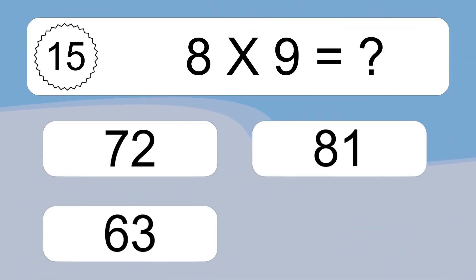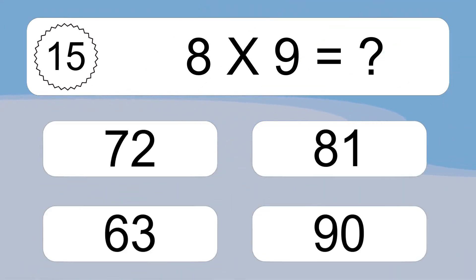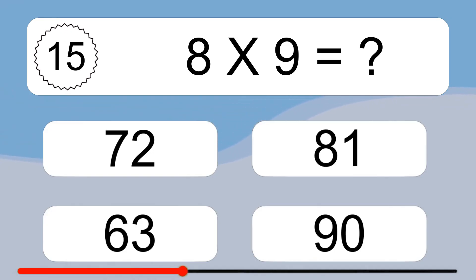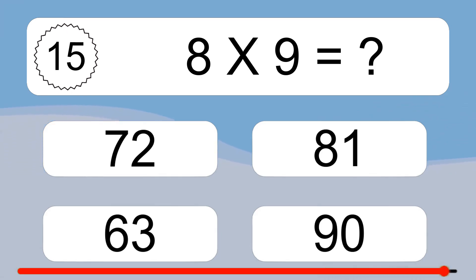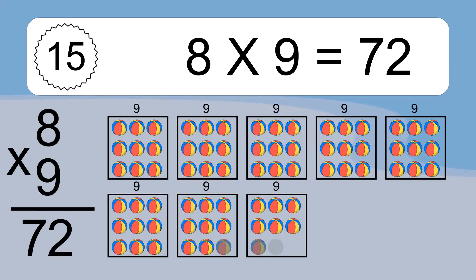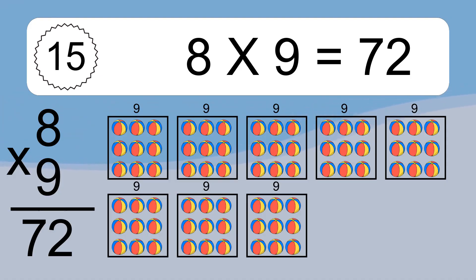8 times 9 equals what? 8 times 9 equals 72. We have 8 boxes, and each box has 9 colorful balls inside. If you count all the balls in all the boxes together, you will have 8 times 9 balls. This equals 72 balls.